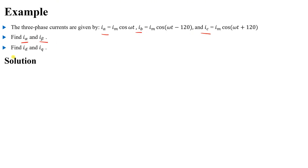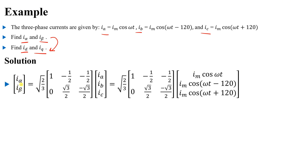Then we can get i_d and i_q by converting from alpha-beta to dq. We get i_alpha and i_beta using the Clark transformation: [i_alpha, i_beta] = [transformation matrix] × [i_a, i_b, i_c]. In this transformation, I used the power-invariant form.